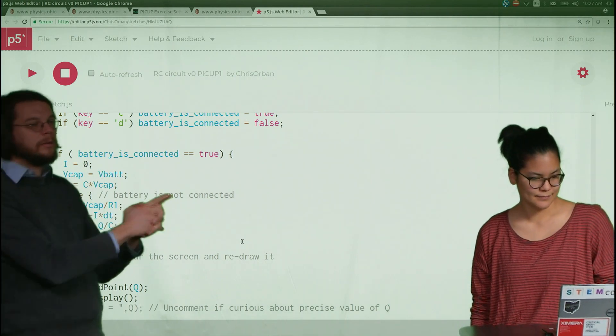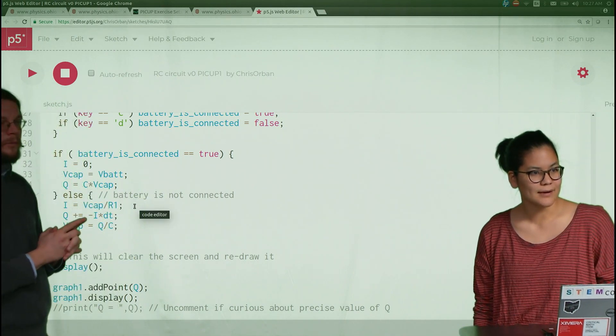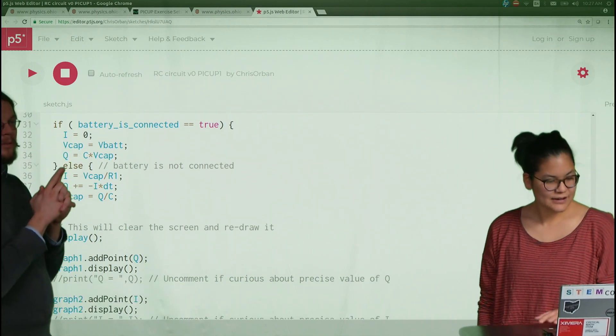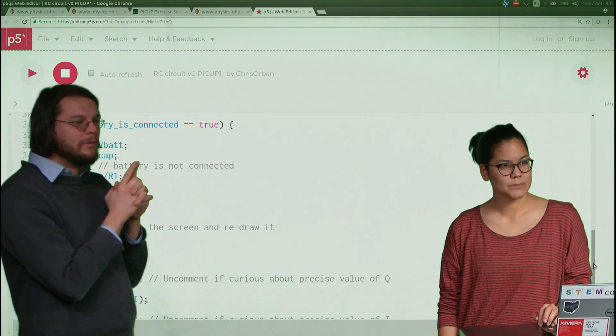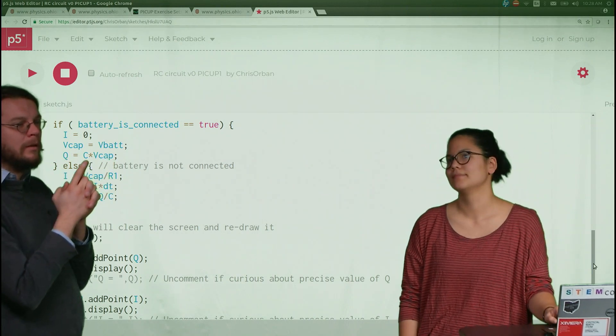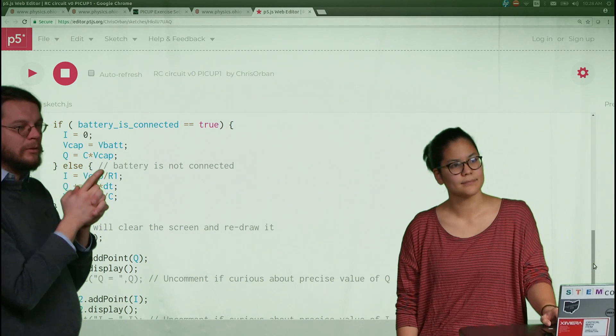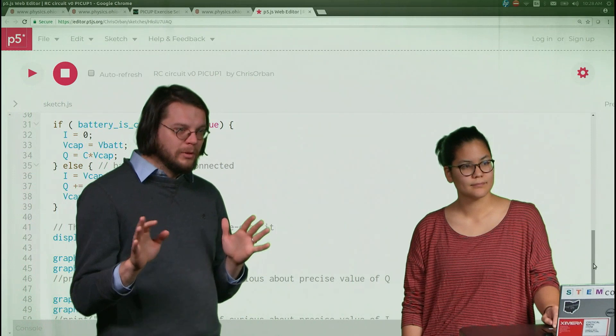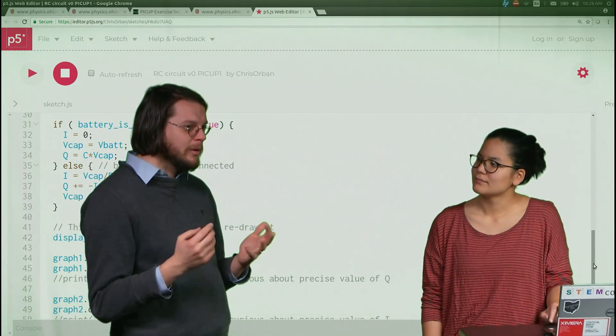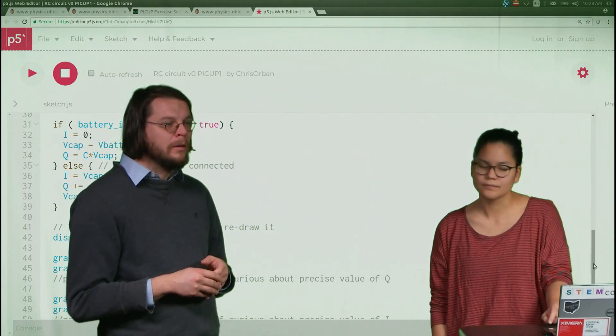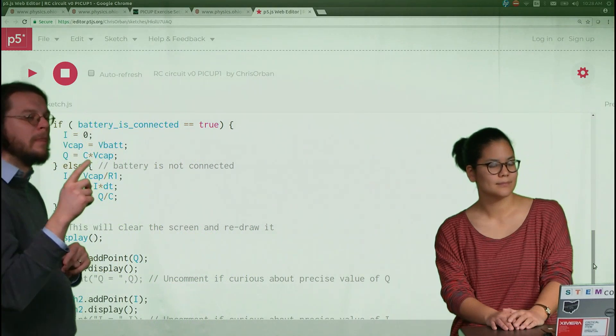The key thing there is that there's no resistance, at least in the original version of the program which is what we're looking at now. There's no resistance between the battery and the capacitor. As a result, the current is zero because in an instant all that charge jumps onto the capacitor basically. Now we're going to have to change that in a minute. The resistor that we have going, it's not in that loop with the battery initially. It's down here because the battery is disconnected.